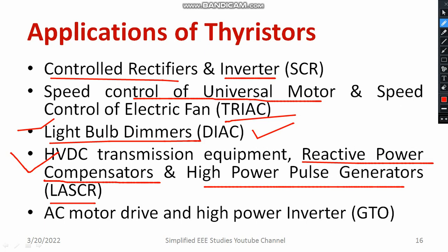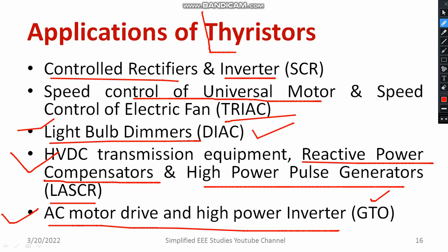Similarly, reactive power compensators and Thyristor-switched capacitors are other applications. Unified power conditioning devices also make use of SCR. High power pulse generators use LASCR. For AC motor drives and high power inverters, GTO can be used. So, the applications span SCR, TRIAC, DIAC, GTO, and LASCR — all members of the Thyristor family.